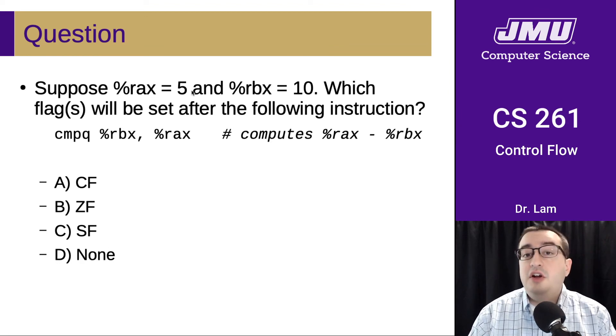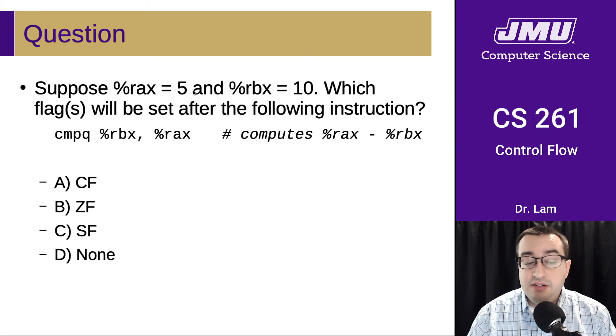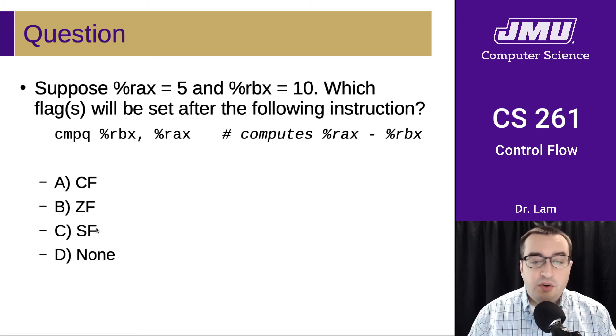It's going to be a very large unsigned number that, if interpreted in two's complement, is actually negative 5. So the zero flag is not going to be set. But it is a negative number. That sign bit is going to be set. So the sign flag will be set. So it'll be CF and SF in this case.